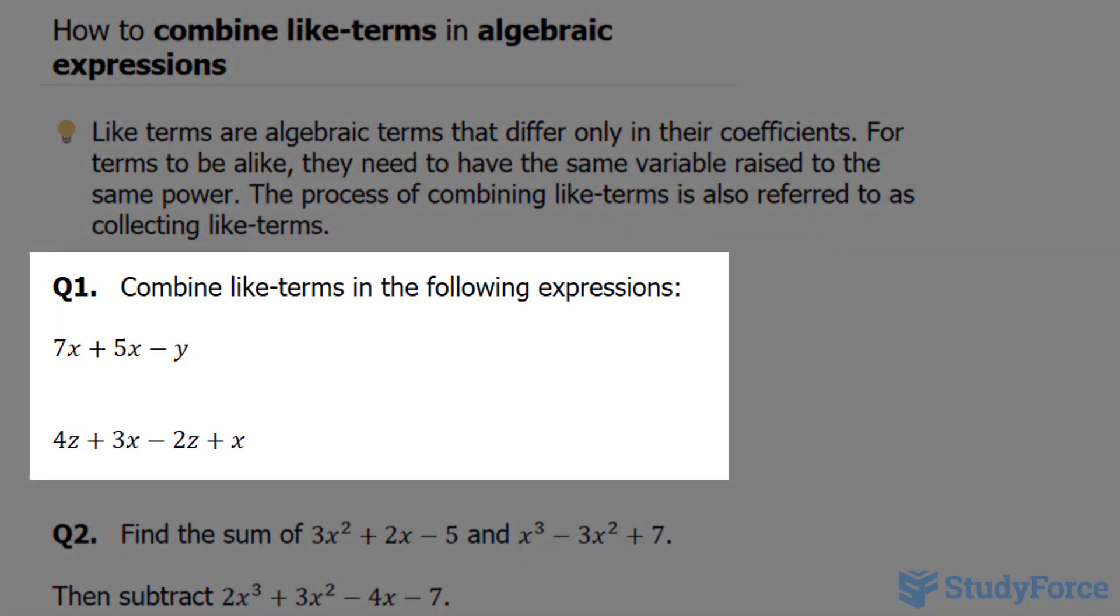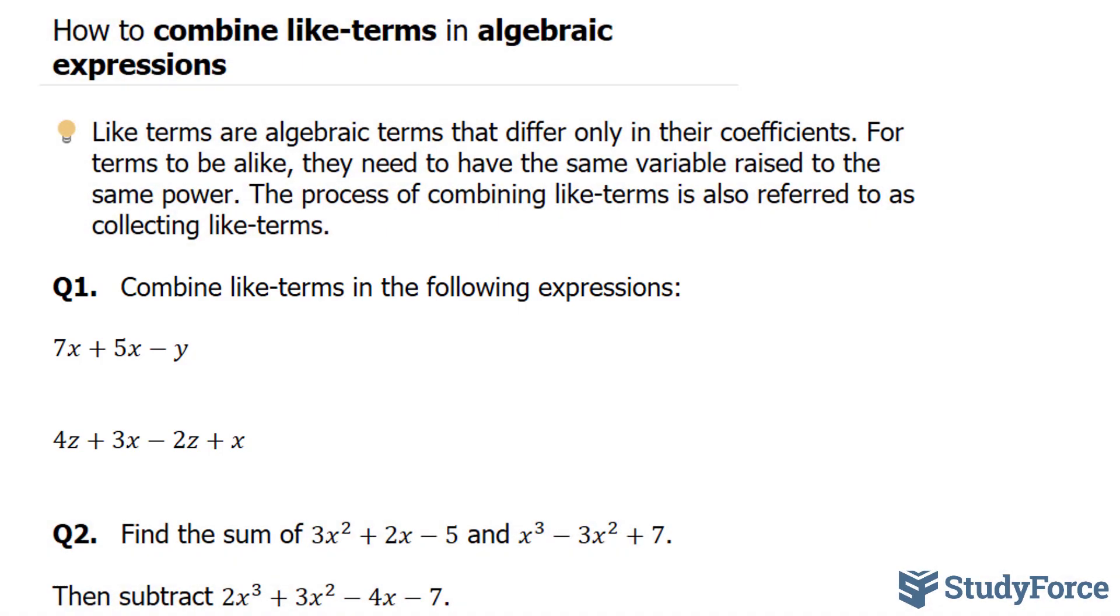Question 1 reads, combine like terms in the following expressions. Let's start with the first one. We have 7x plus 5x minus y. This expression contains three terms, and you'll notice that the first two terms both have the variable x, and x is being raised to a power of 1, even though it's not shown.